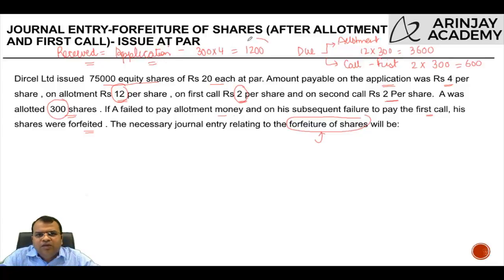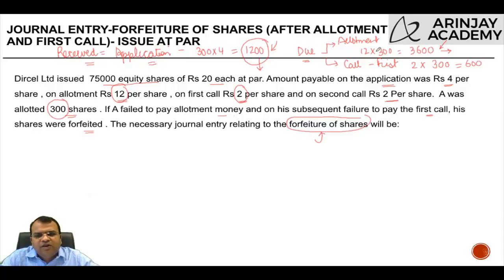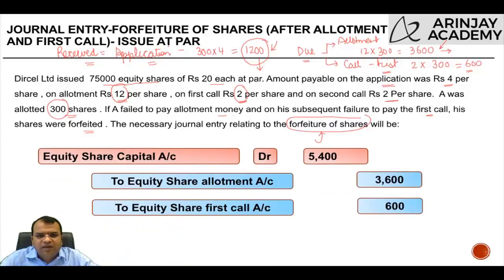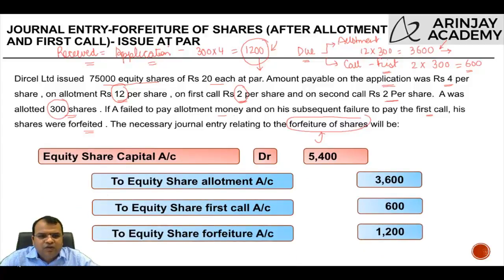Whatever was received at the time of application is the money that would be forfeited. So the amount credited to the share forfeiture account will be rupees 1,200. The amount of money which was made due but not received was rupees 3,600, so we will reverse this entry. When the amount was due, the entry was: share allotment debit to equity share capital. Now we reverse it: equity share capital debit to share allotment. The same applies for the first call — rupees 600 was due but nothing was received. So equity share capital will be debited, share allotment credited, share first call credited, and share forfeiture account credited by rupees 1,200.